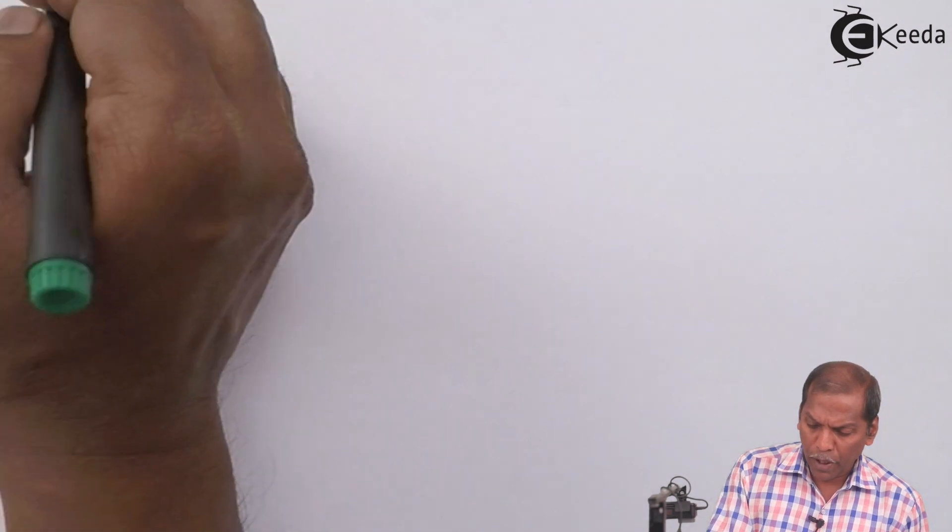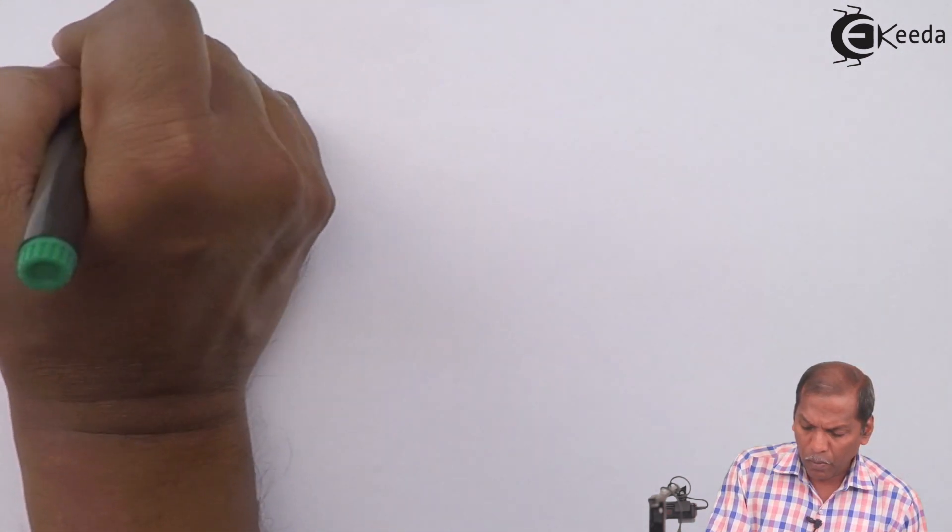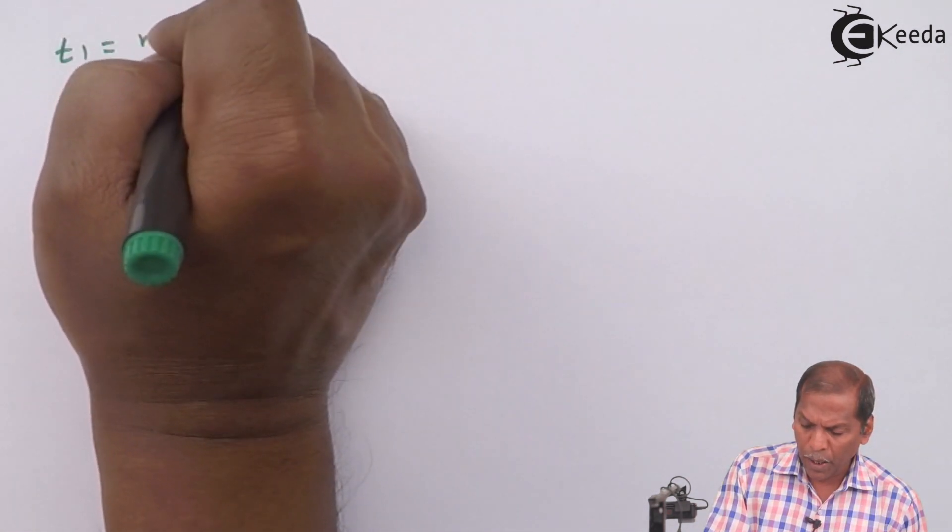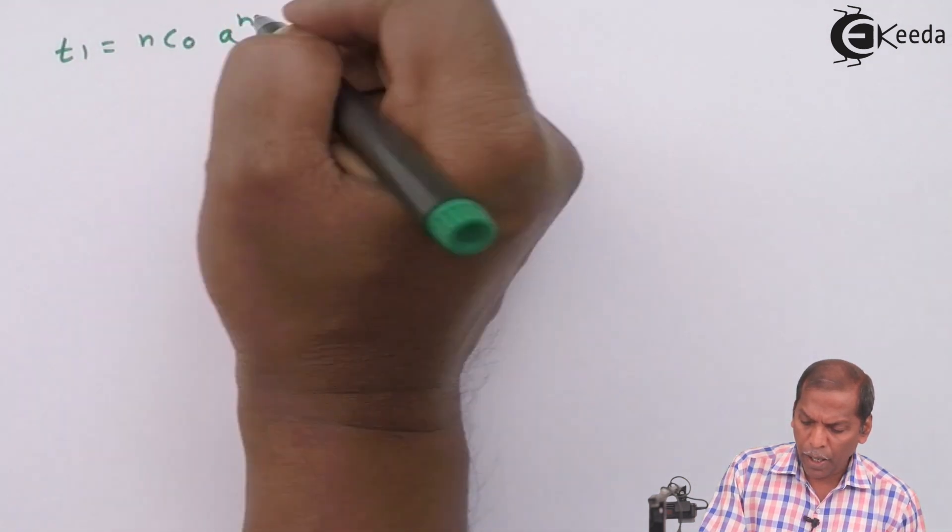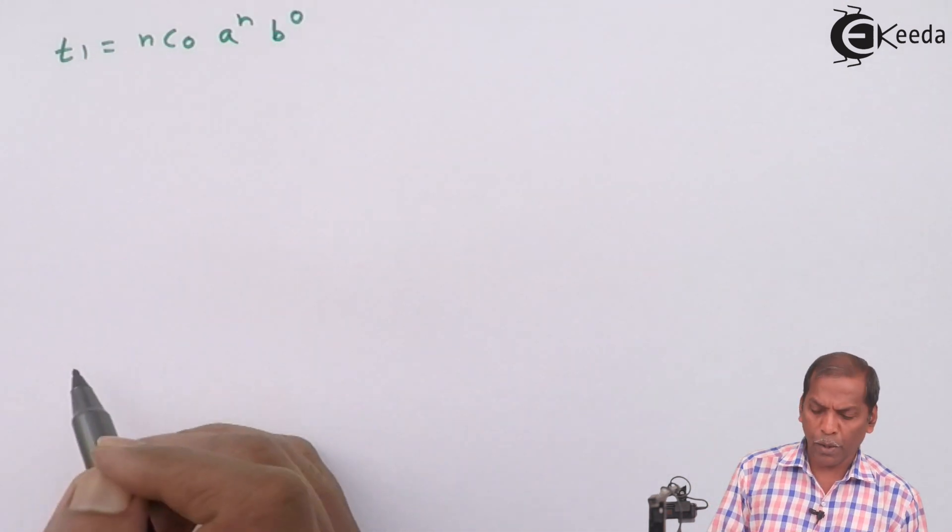For T1, we write nC0 A to the power n B to the power 0.